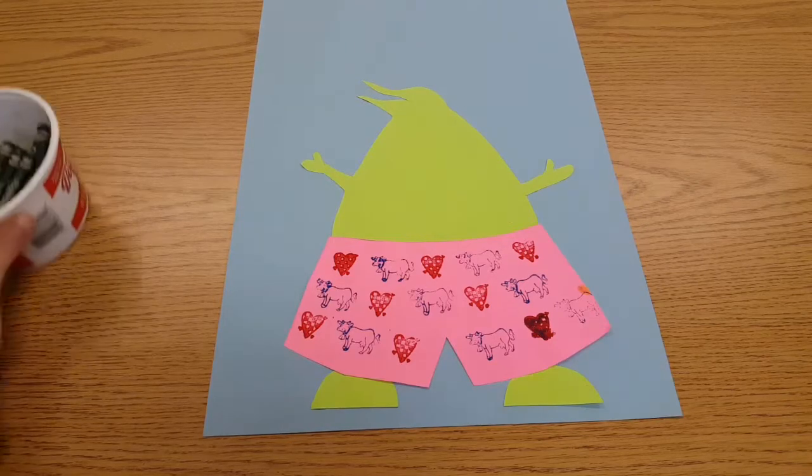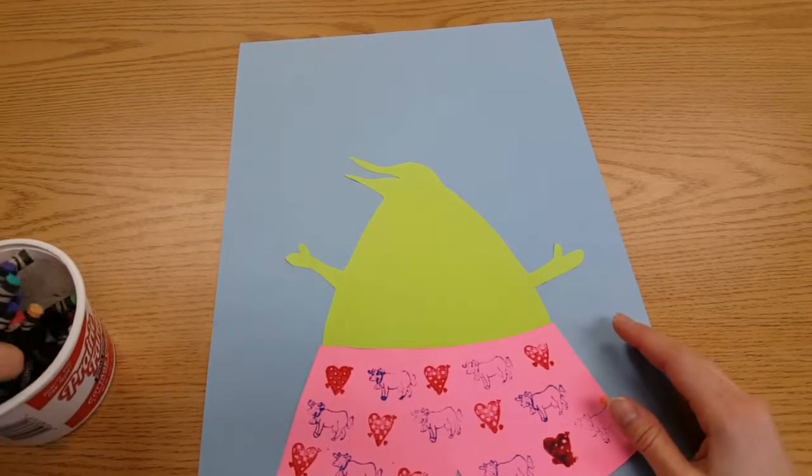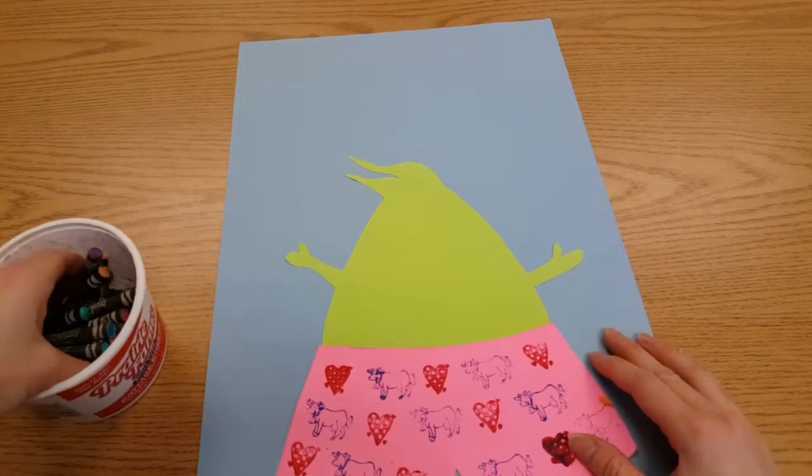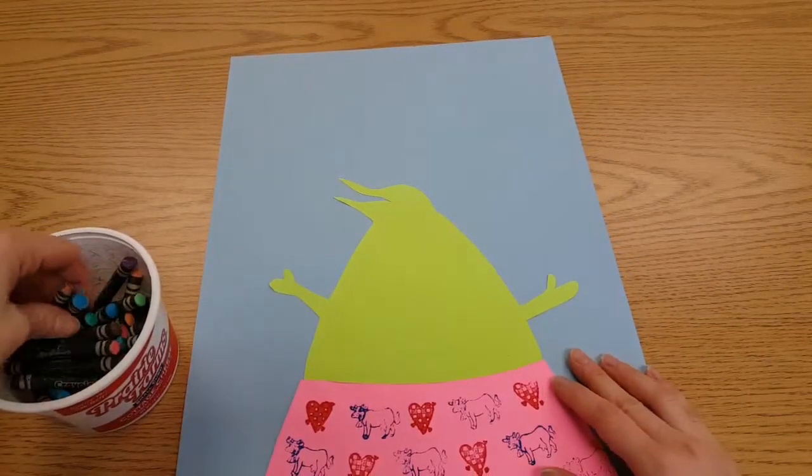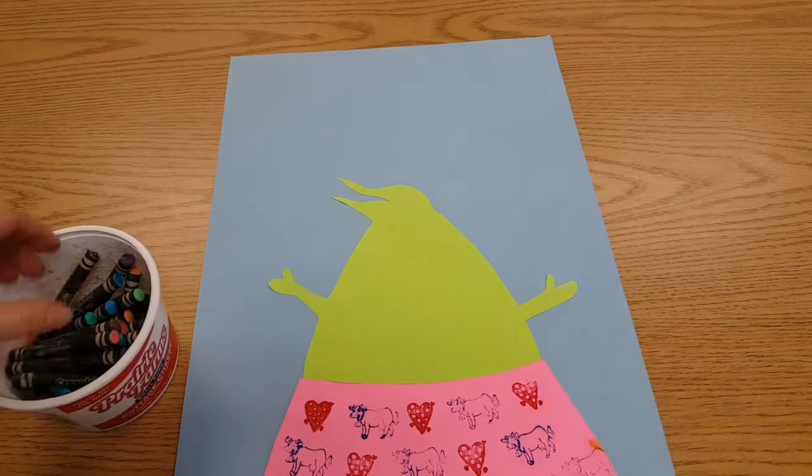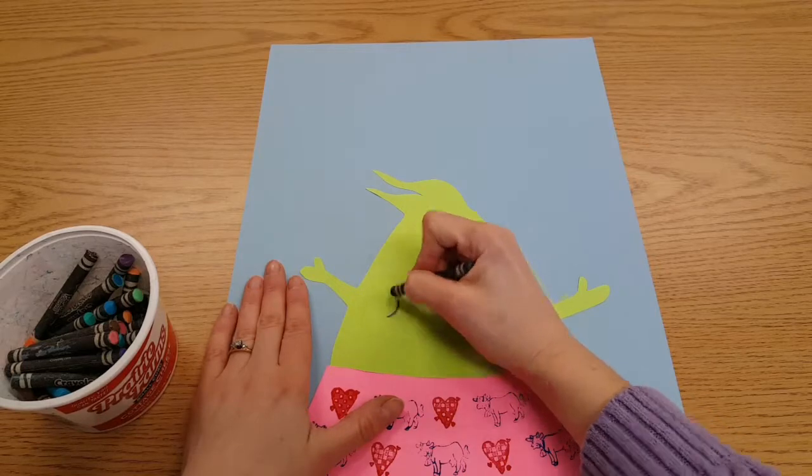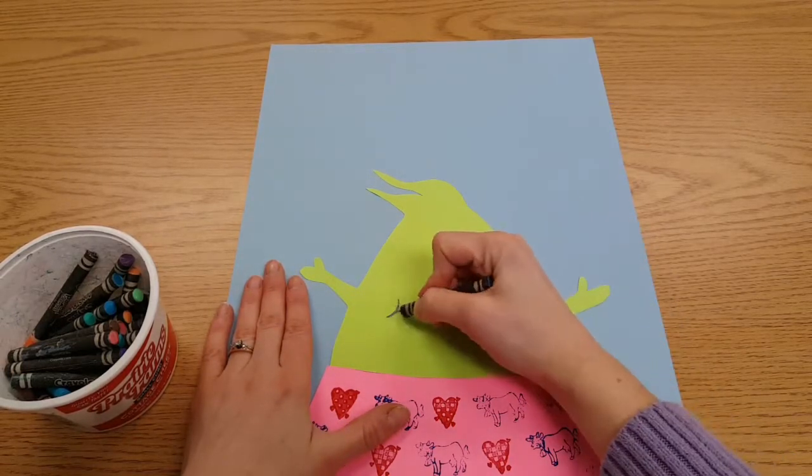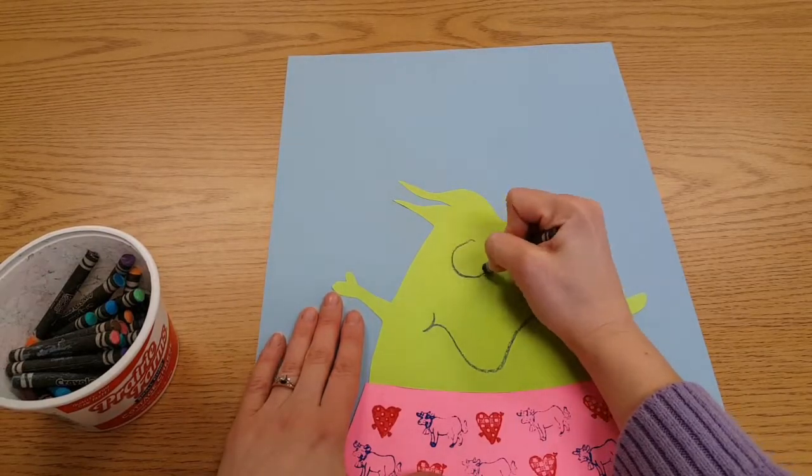My alien needs a face next. So you'll have something to draw with at your table. Crayons. Construction paper crayons is what I have right here. And you're going to make your face for your alien. You decide what look they have. But most of the aliens were very happy because they had underpants.